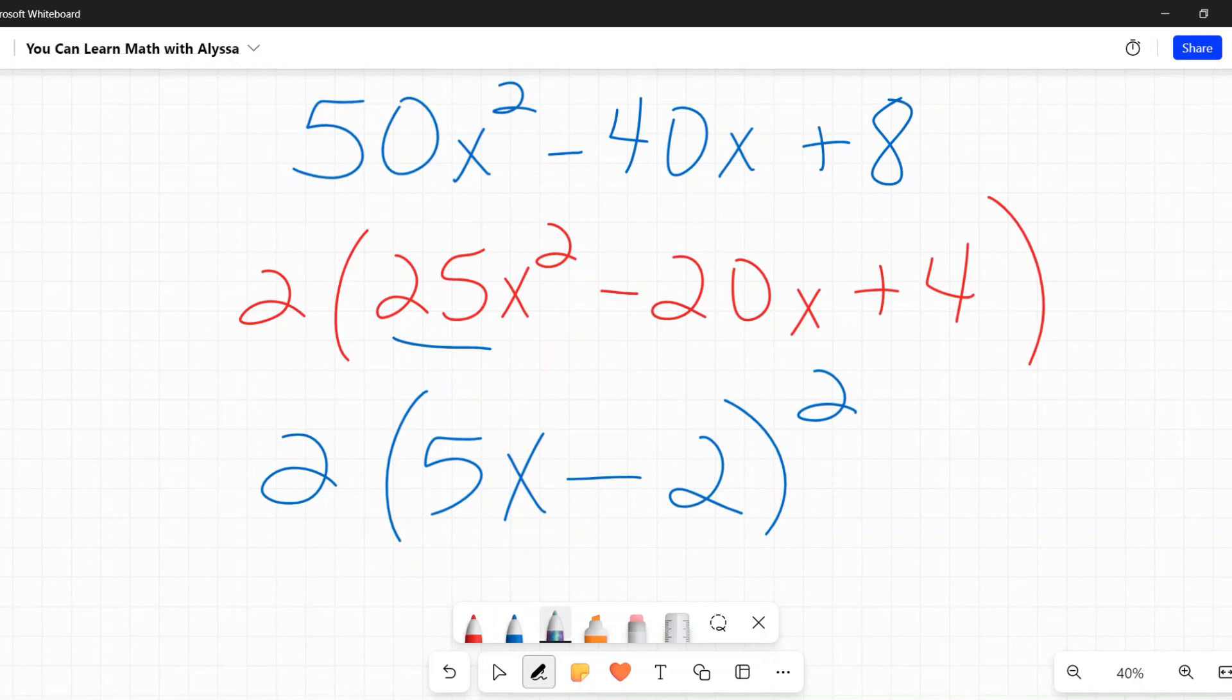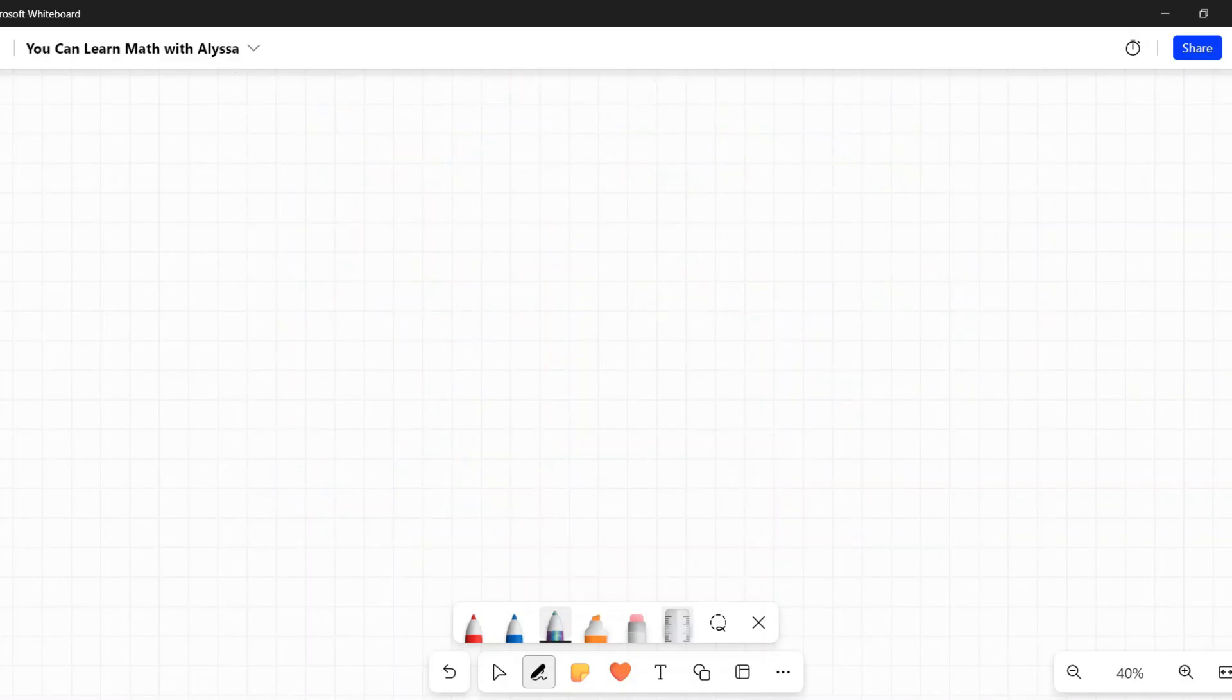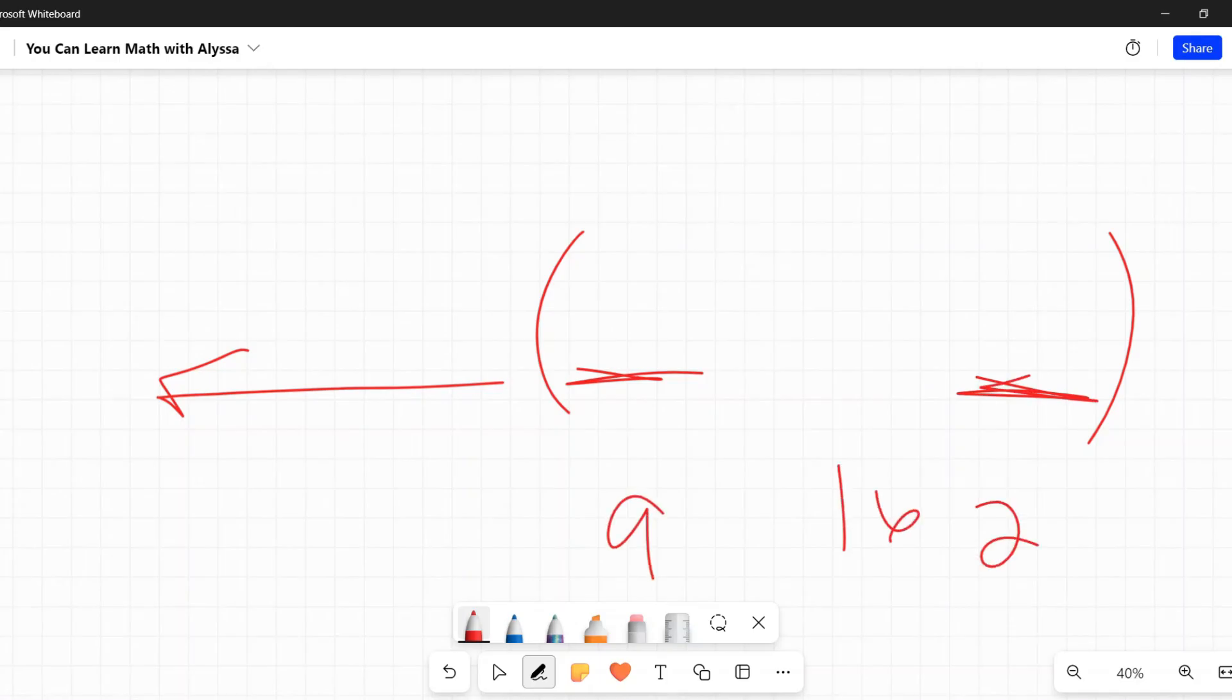So always when you're given these sort of problems, because you will get to a point with factoring where they just tell you factor however you see fit, first pull out that greatest common factor to make the quadratic simpler. And then always look at those first and last terms to see if they are perfect squares. If you see a 9, a 16, a 25, a 100, if you're seeing those perfect squares.